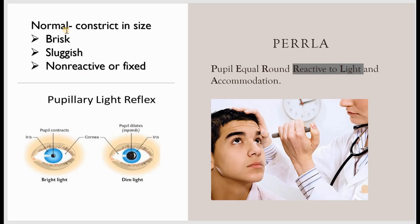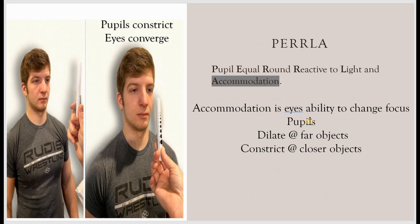That constriction is a normal reaction. You will also assess whether the constriction is brisk, fast, sluggish, or slow in reaction — or whether the pupils are non-reactive or fixed, meaning they don't react to the light at all.